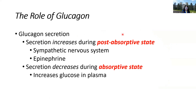Glucagon secretion occurs in response to the sympathetic nervous system. If you're in a fight-or-flight state — nervous or anxious — you use more glucagon and break down stored energy forms. This is why exercise is so powerful: it mimics the sympathetic nervous system, increases heart rate, increases blood flow to peripheral organs, increases epinephrine release, and mimics the post-absorptive state, helping the body break down storage forms and use them as energy. Glucagon secretion decreases in the absorptive state, reflecting the antagonistic roles of these hormones.